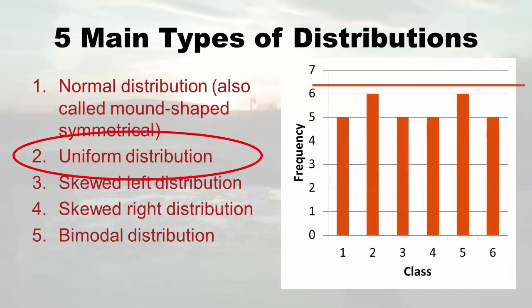In this histogram, each bar's frequency is almost the same — either five or six — regardless of the class. When that's the case, the line you draw across is not squiggly at all, it's straight. This is called the uniform distribution, which makes sense — all the bars are a uniform height. I don't see this very often in healthcare data, but it does happen in other kinds of data.